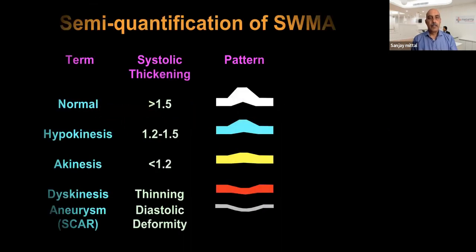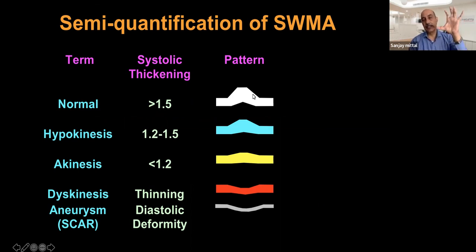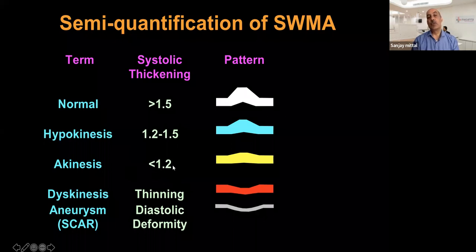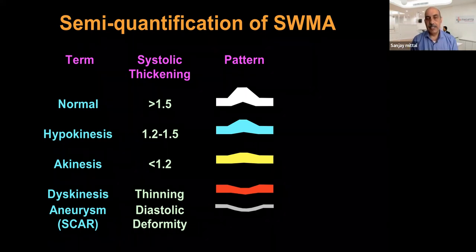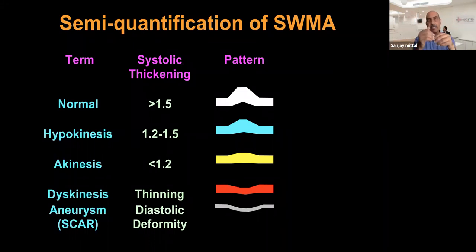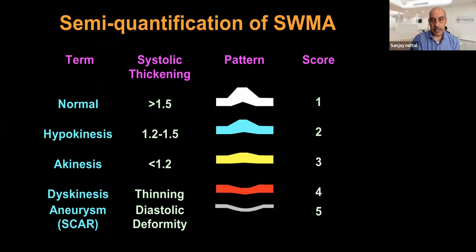Regarding quantification of wall motion abnormality — normal is 50% or more thickening or increase in systolic thickness; hypokinesis is 20 to 50% thickening; akinesis is less than 20% thickening; dyskinesis is when the segment actually thins out during systole instead of thickening; and aneurysm is when there is diastolic deformity with outpouching even in diastole. We give a score of 1 through 5 — the higher the number, the less the viability in that segment.